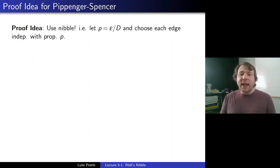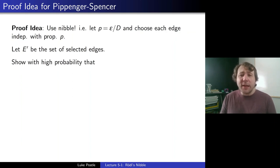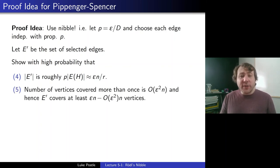And in that sense, if we do it just a little bit at a time, the more you think about it, it's quite unlikely to have those overlaps. So you're going to create a good cover for those vertices you do cover. So more precisely, we'll let E' be the set of selected edges. And we'll show with high probability that |E'| is roughly p|E(H)|, which is going to be approximately εn/r. So we're going to get an ε fraction of the cover that we want. We're going to show that the number of vertices covered more than once by these edges is something like ε²n. So then, the chance you get covered twice would be more like ε²n. And hence, E' will cover at least an ε fraction minus ε²n vertices. So that number that gets overlapped, if you think ε is very small, the ones that get covered twice or more will be a small fraction of the ones that are actually covered.